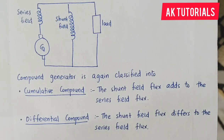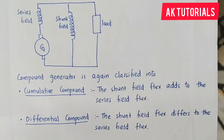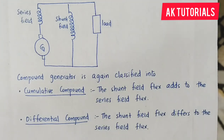The DC motor types are series motor, shunt motor, and compound motor — the same as the generator. The construction and working sections are also the same. See you in the next class. Bye.